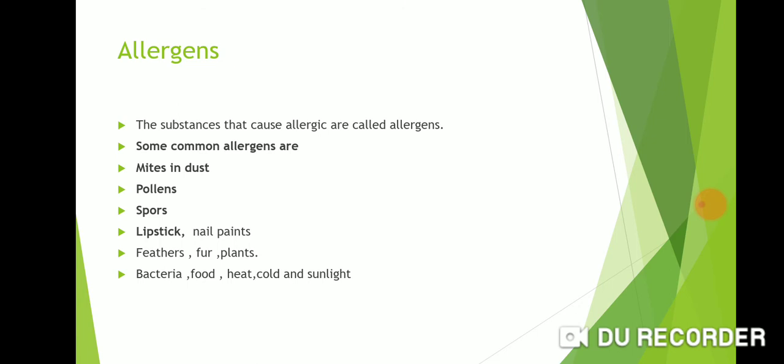First allergen is mites in dust. The dust particles have mites present — small particles that affect the skin of some persons. Second allergen is pollen grains. You know about them — they are very effective. One species you may have heard of is Parthenium.